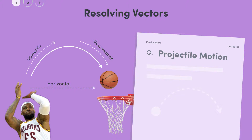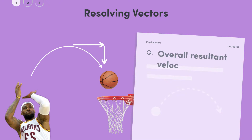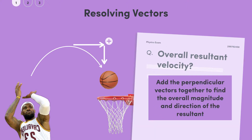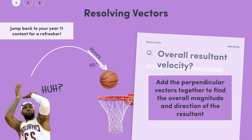In these cases, to deal with the problems you're given, you should split the vectors into horizontal and vertical components — it simplifies the problem massively. It's worth noting that a lot of these questions also ask you to give the overall resultant velocity, so after splitting the situation into two components, you'll need to add the perpendicular vectors back together to find the overall magnitude and direction. If you're having a head-scratching moment, jump back to your Year 11 content to brush up on resolving vectors. We'll be doing some examples in a later video.